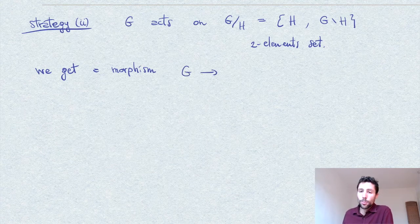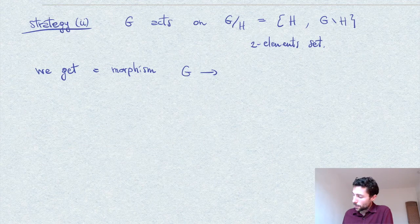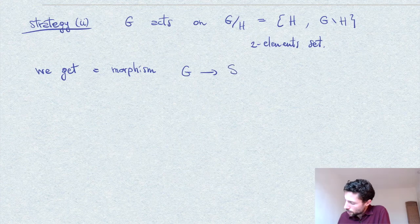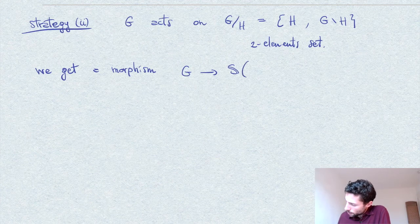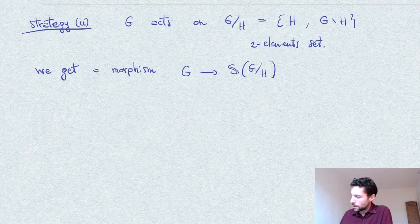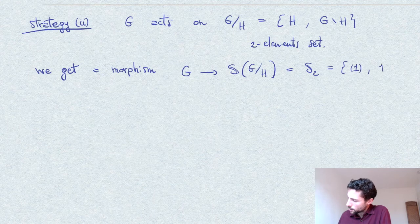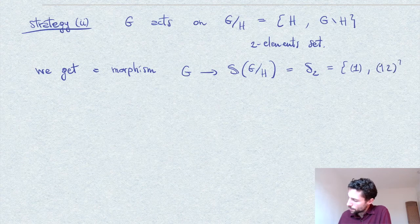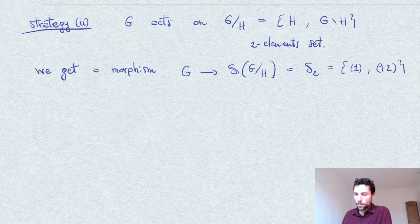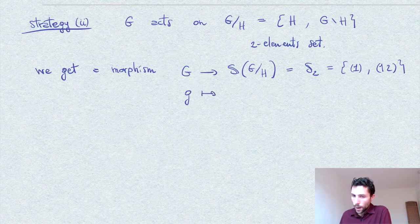And we know that this coset will either be H or G minus H, just as before. Now we focus on this action, and we then observe that from this we get a morphism from the group G to precisely the set of permutations, or the group of permutations of this two-element set. That's denoted by S of G over H. So since this is a two-element set, we can write this just as S2. And let me give a name to our two elements: one is the identity and one is the cycle (1 2).